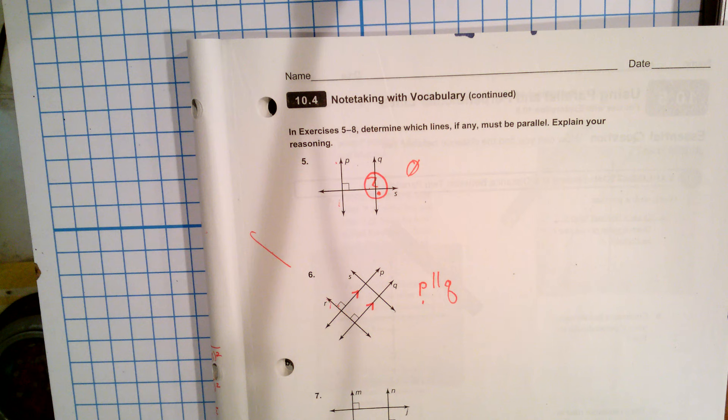Our last idea is this. You're given a series of lines and a picture, and your question is, is anything parallel? In problem five, we can't tell. Honestly, nothing is marked enough to tell whether any lines are parallel. So there's no answer there.